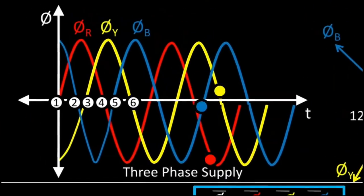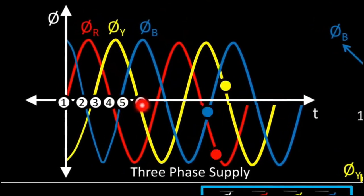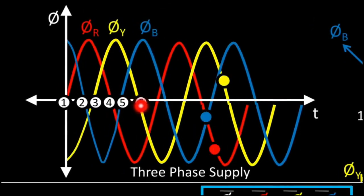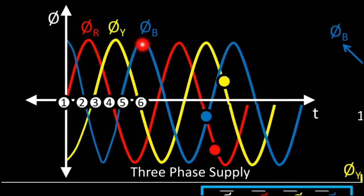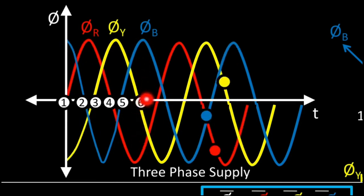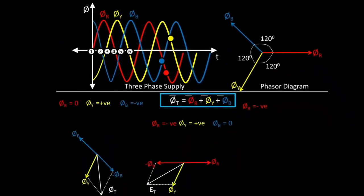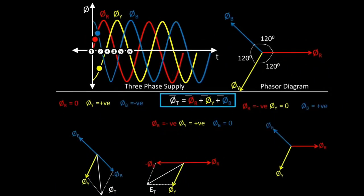At instant 6, we check the values for different fluxes. φY intersects with the x-axis, so it is 0. φB is upward, so it is positive. And φR is downward, so it is negative. So at instant 6: φR = negative, φY = 0, and φB = positive.